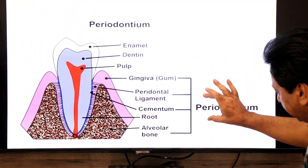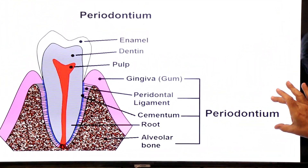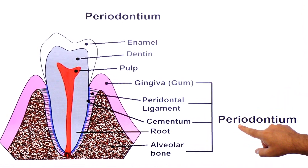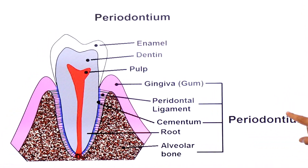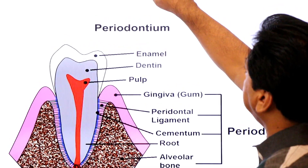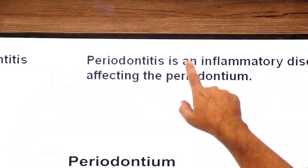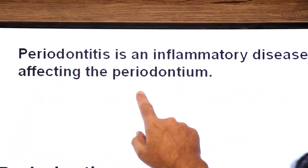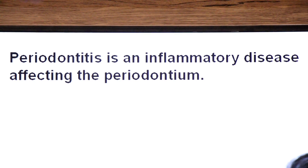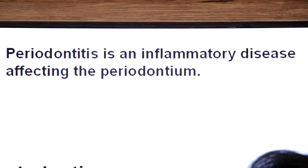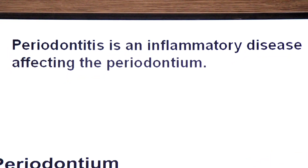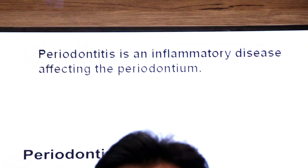The periodontium consists of four parts: gums, periodontal ligament, cementum, and alveolar bone. Together these four parts are called the periodontium. Periodontitis is an inflammatory disease affecting the periodontium.